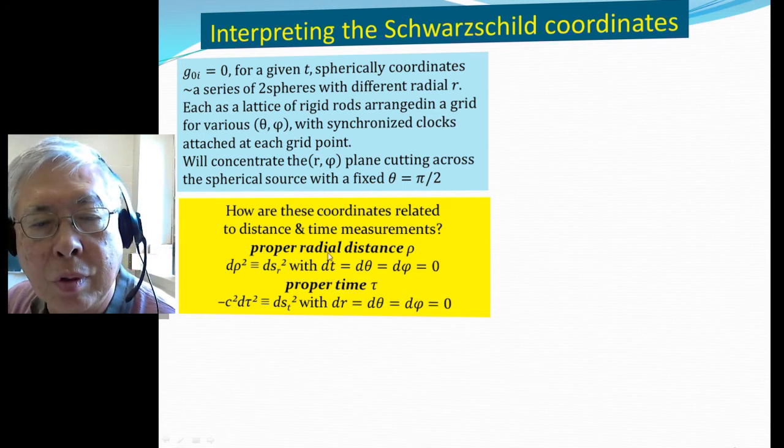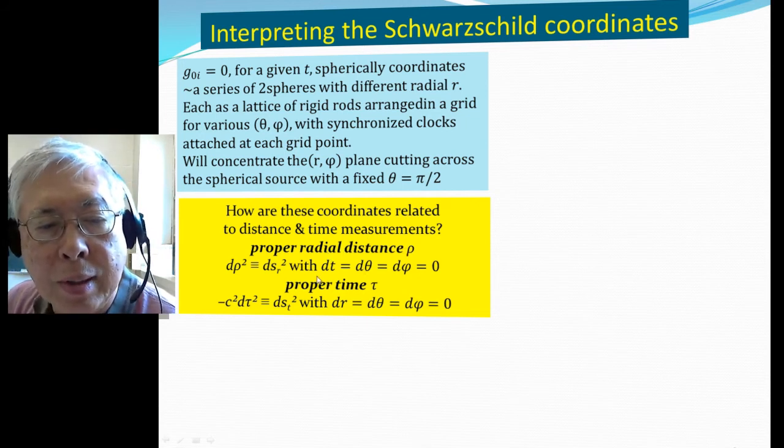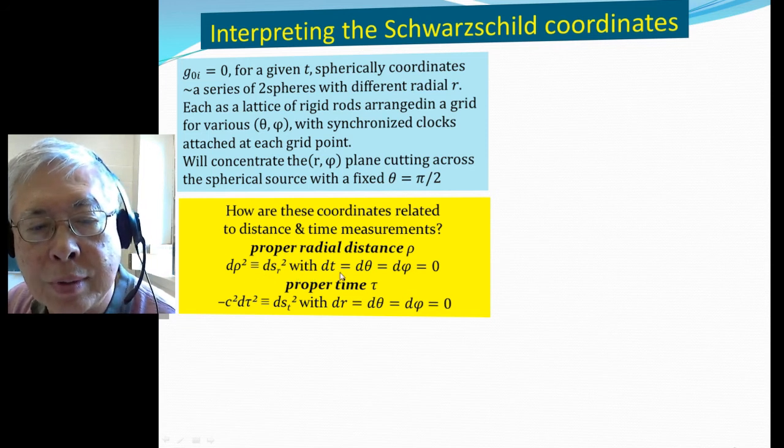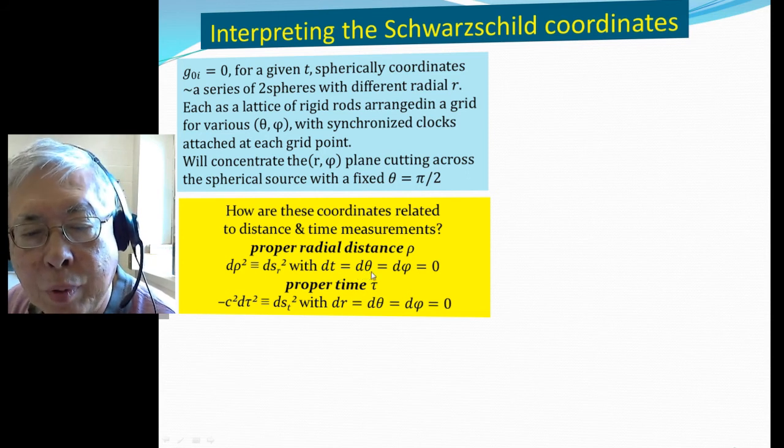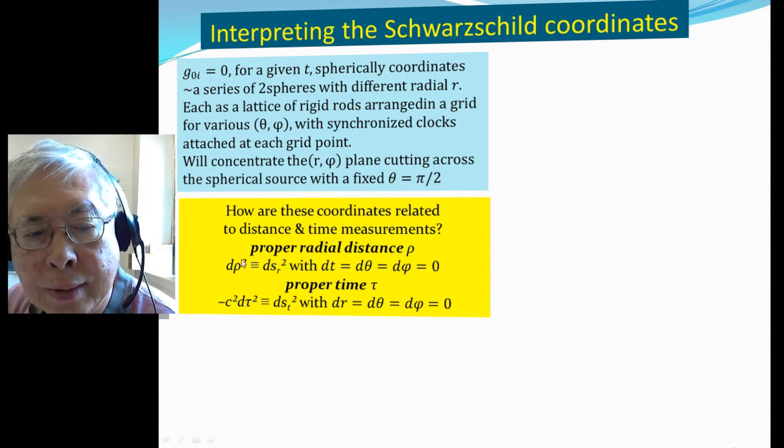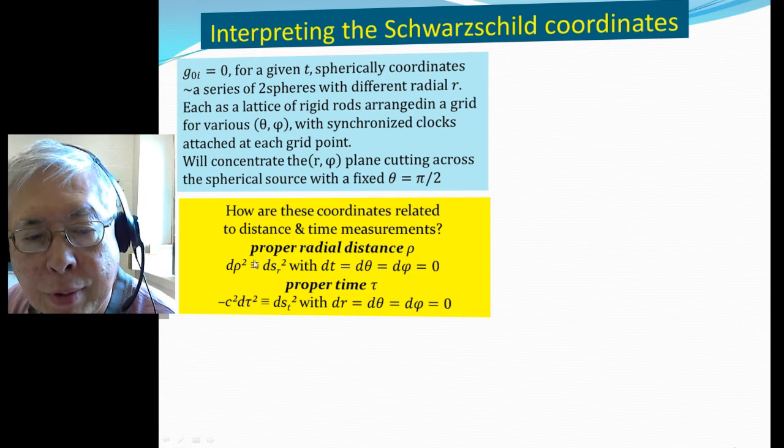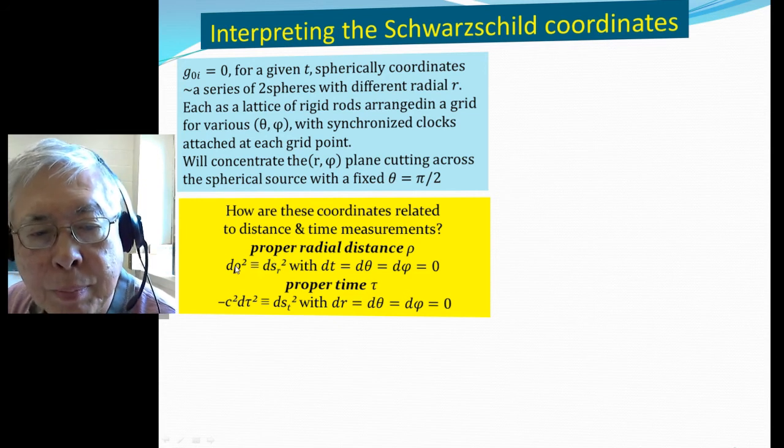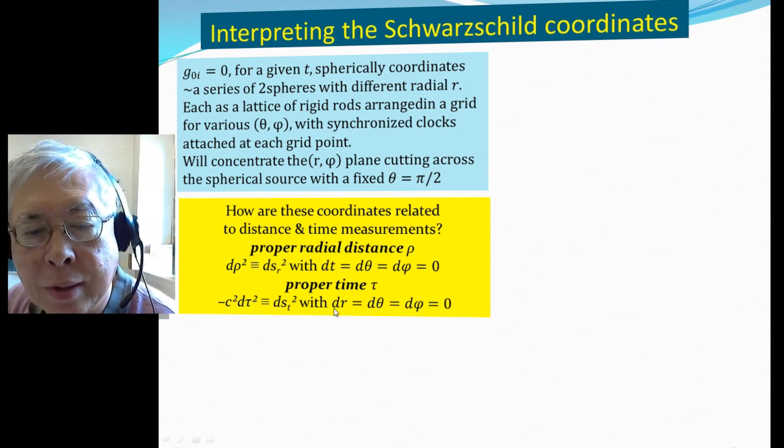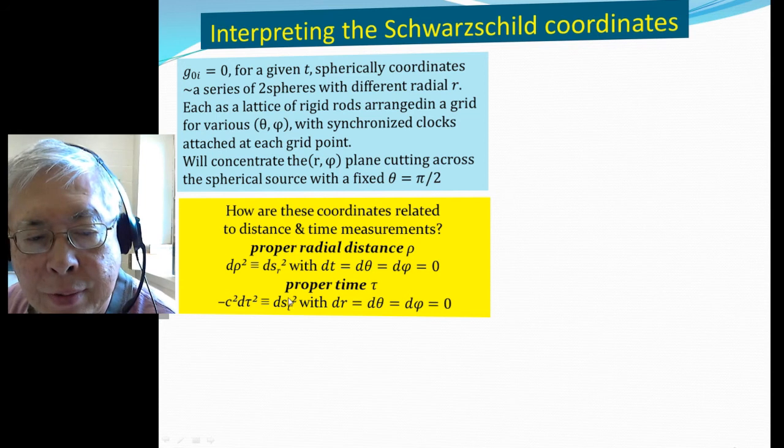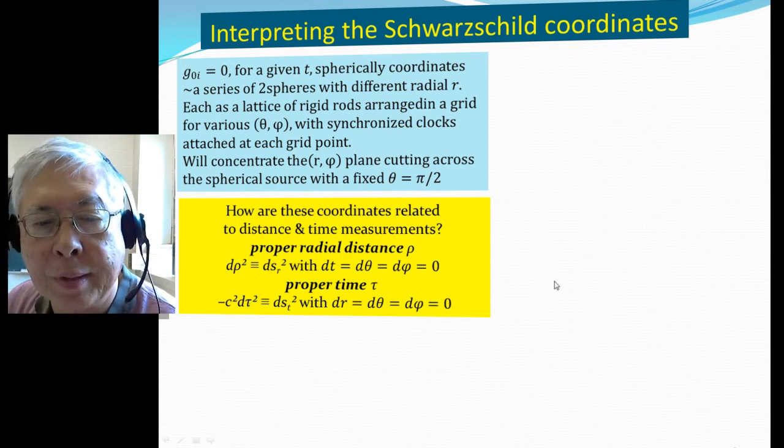For the proper radial distance rho, you measure the distance with time and theta fixed, and also fixed the azimuthal angle. So the only thing is the radial part, and that we call the measurement length in the radial direction, the proper radial distance. Same way for proper time, we fix the r, theta, phi values at fixed position, and the time measure we make is related to proper time.